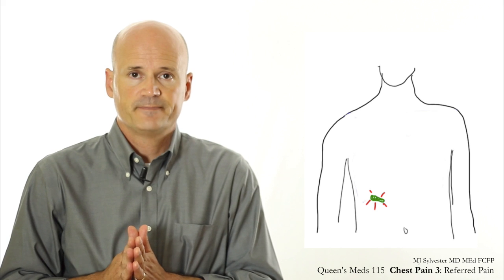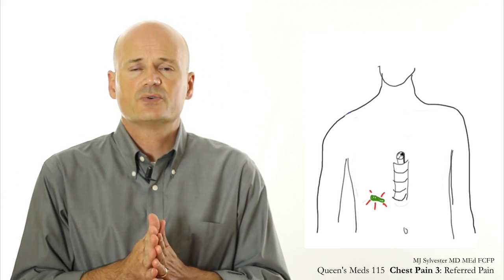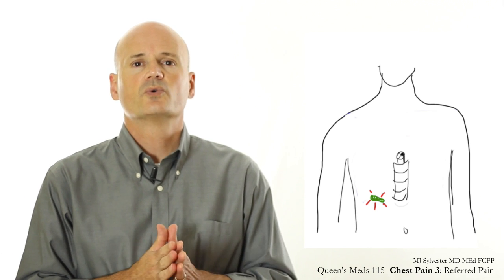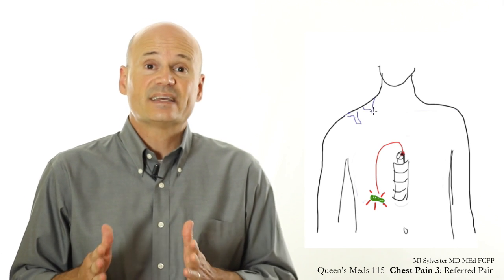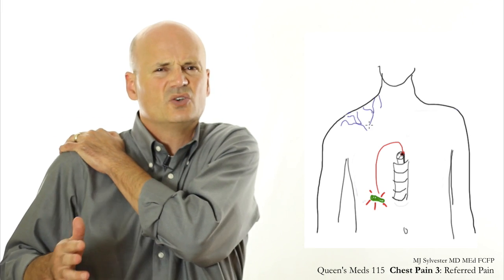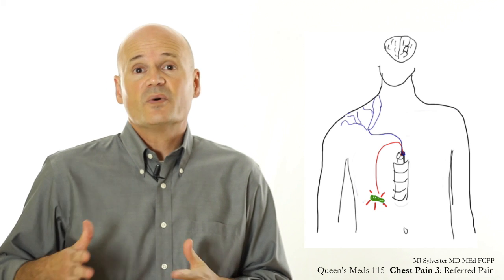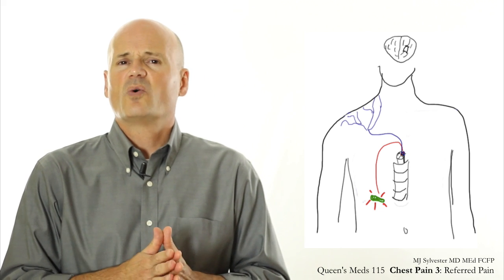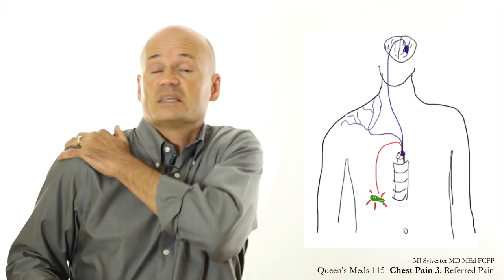So I'm not sure if researchers have settled on the precise mechanism that causes referred pain, but my favorite theory goes like this. Let's say your gallbladder is injured and it sends signals to a switching station in your spinal cord called the dorsal root ganglion. Well, that same switching station handles all the signals that come from your shoulder muscles and in your skin. That means that when your brain hears from that switching station in your spinal cord, it's most likely to interpret those signals as coming from your shoulder.